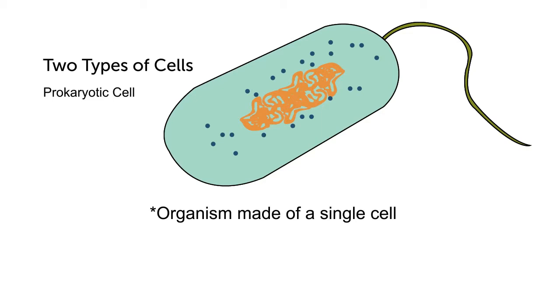As well as being a smaller and less complex type of cell, prokaryotic cells do not have a membrane-bound nucleus, which means their genetic information, their DNA, floats freely inside the cell.